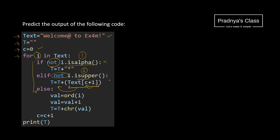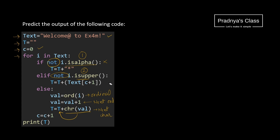If these two conditions are false, we will come to the else part. Using the ord function, we get the ordinal value of the character, then add 1 to it — meaning we get the next ordinal value. On that next ordinal value, we apply the chr function, so we get the next character according to the ordinal value. That character gets concatenated to the previous string. After every iteration, the value of C will get incremented by 1.